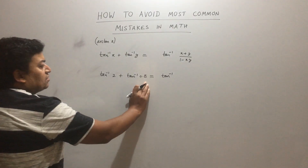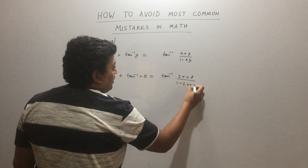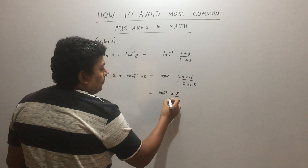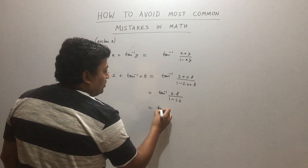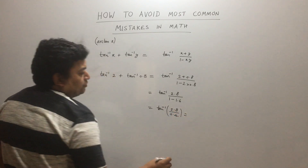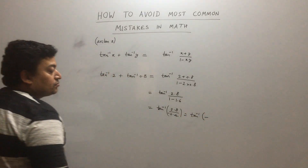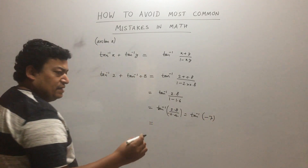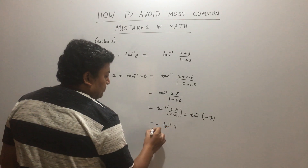So we calculate: tan⁻¹((2 + 0.8) / (1 - 2×0.8)) = tan⁻¹(2.8 / (1 - 1.6)) = tan⁻¹(2.8 / -0.4) = tan⁻¹(-7). Since tan⁻¹(-7) = -tan⁻¹(7), people write the answer as -tan⁻¹(7).